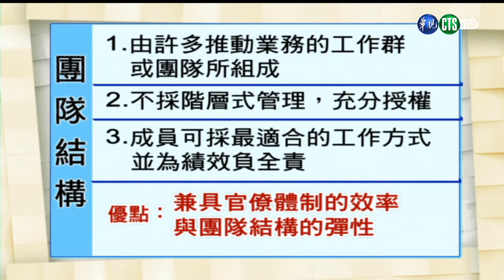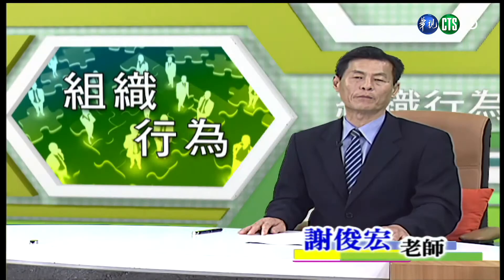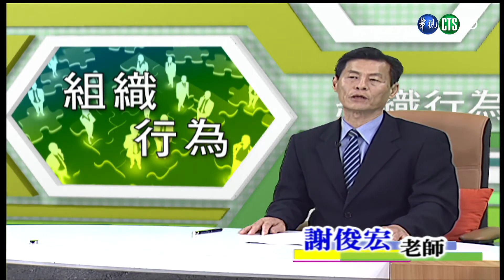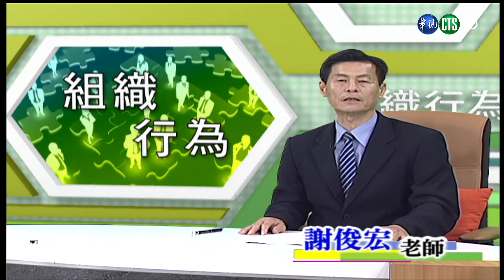根据研究指出，在大型组织里面，团队结构可以弥补功能或事业部结构的不足，让组织可以兼具官僚体制的效率。例如亚马逊、波音、惠普、Motorola等公司，大多采用自我管理团队来提高生产力。